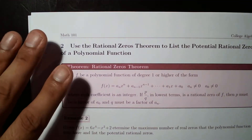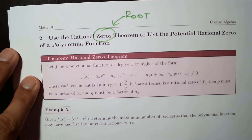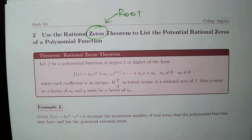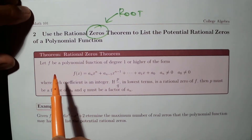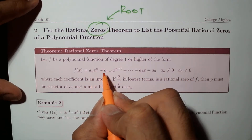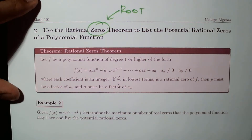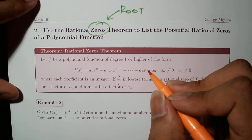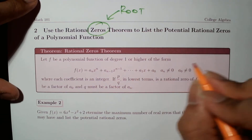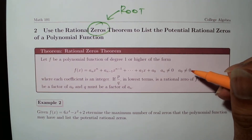Now let's move on to the Rational Root Theorem, also known as the Rational Zero Theorem. For a polynomial function with integer coefficients, we need to find P over Q, where P represents all possible factors of the constant term and Q represents all possible factors of the leading coefficient. The constant term and leading coefficient cannot be zero.